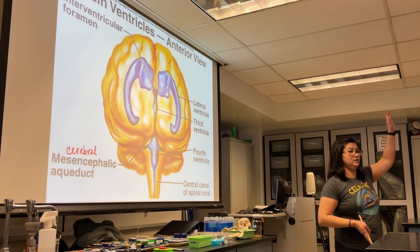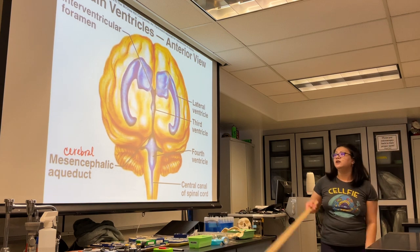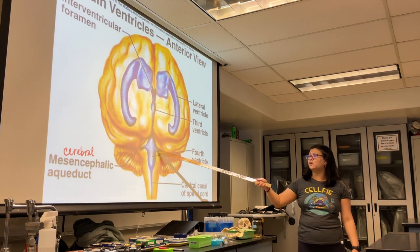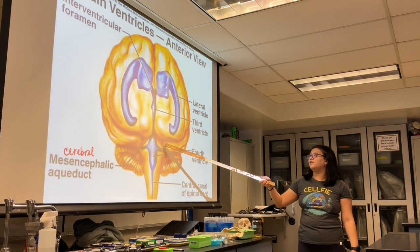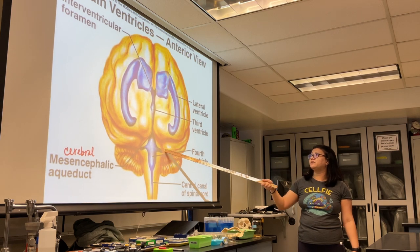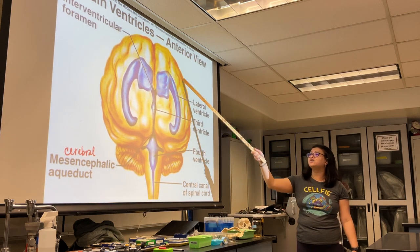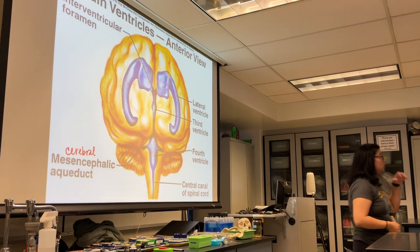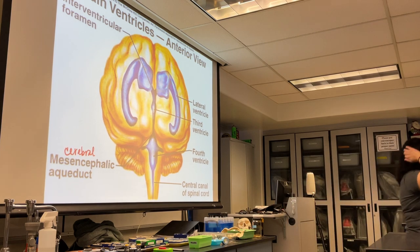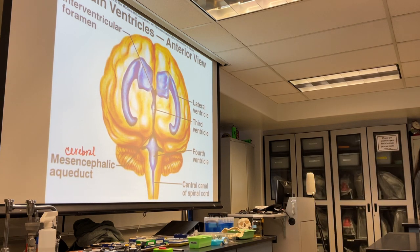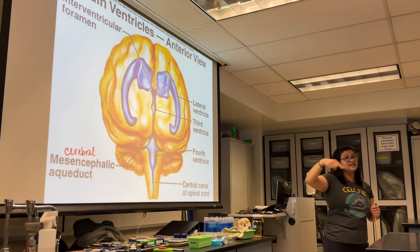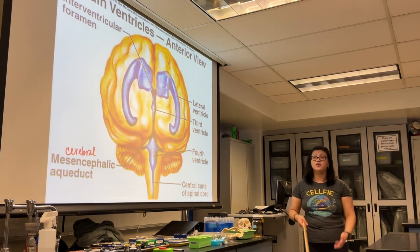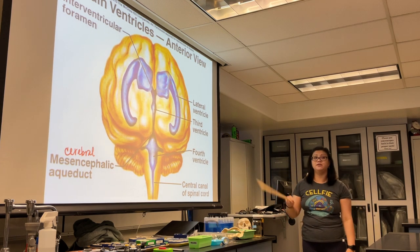From the fourth ventricle, the cerebrospinal fluid goes back and surrounds the brain, eventually finding its way over to the superior sagittal sinus, where it's reabsorbed by the body to take away wastes generated by the brain.